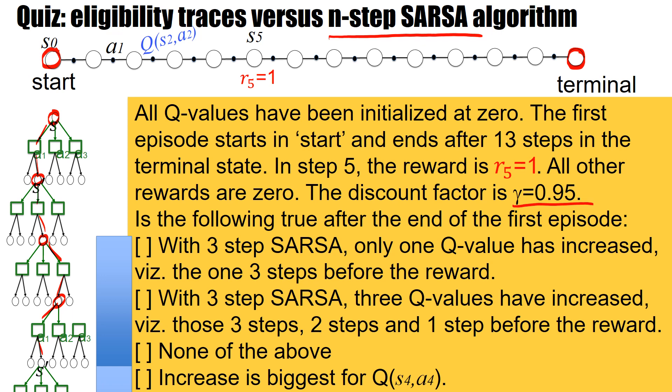Is the following true after the end of the first episode? We have three claims. For three-step SARSA: first, only one Q-value has increased — the one three steps before the reward, which is Q(S2, A2). Second, three Q-values have been increased — those three steps, two steps, and one step before the reward: Q(S2,A2), Q(S3,A3), and Q(S4,A4).